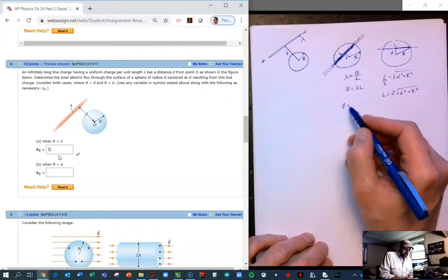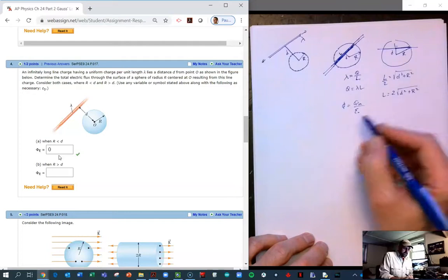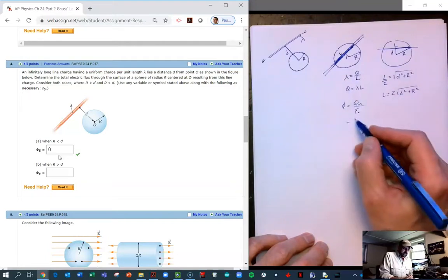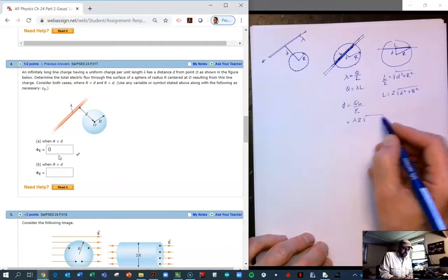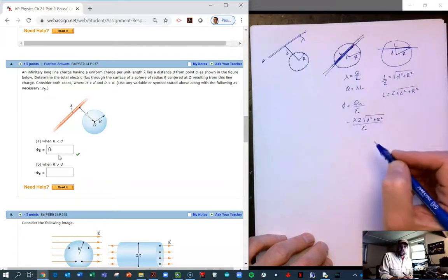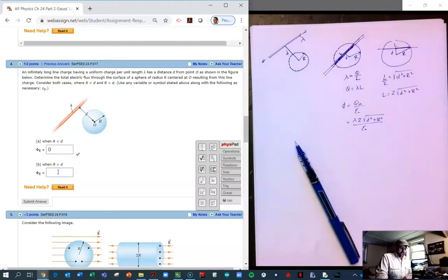Okay, and so the flux is simply the charge enclosed divided by epsilon naught. And the charge enclosed is lambda times L. And L we see is 2 square root D squared plus R squared, all of that over epsilon naught. So this is a symbolic answer here. So let's see if we can do this.